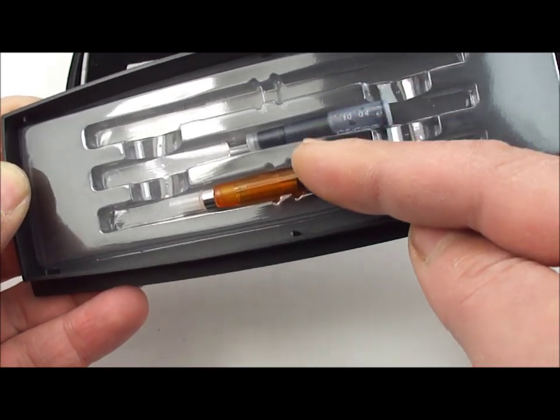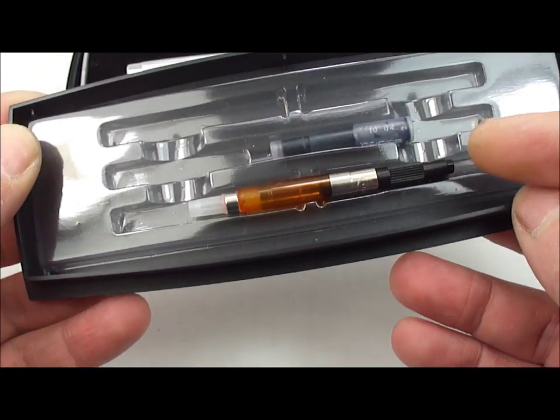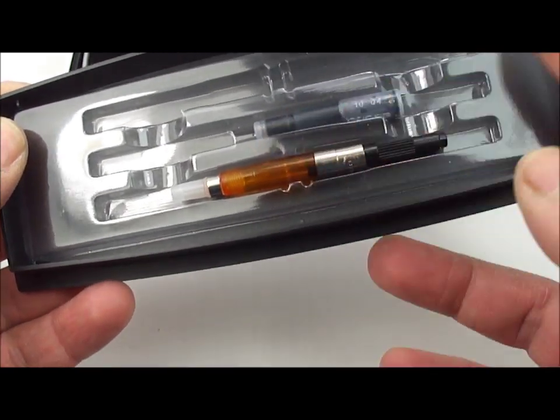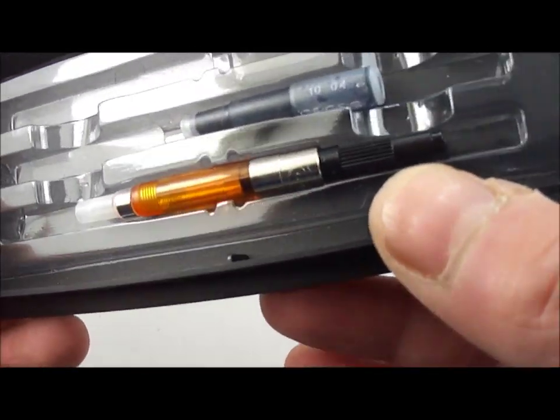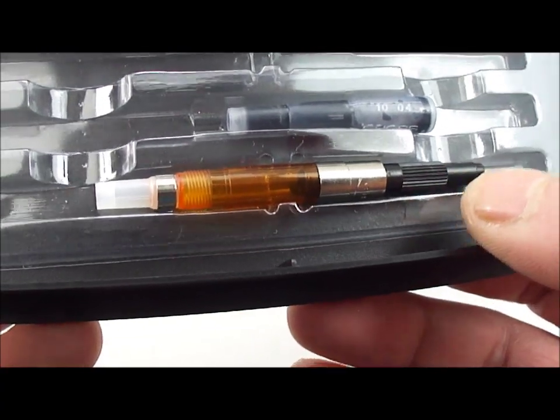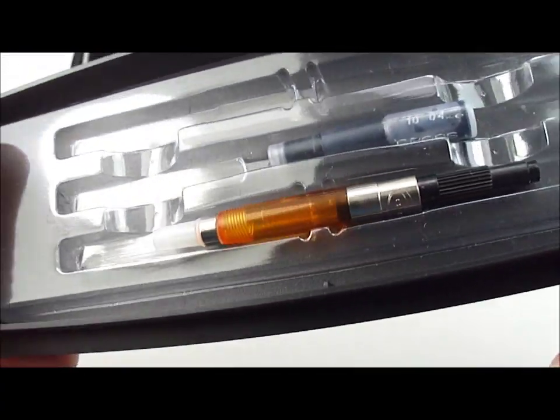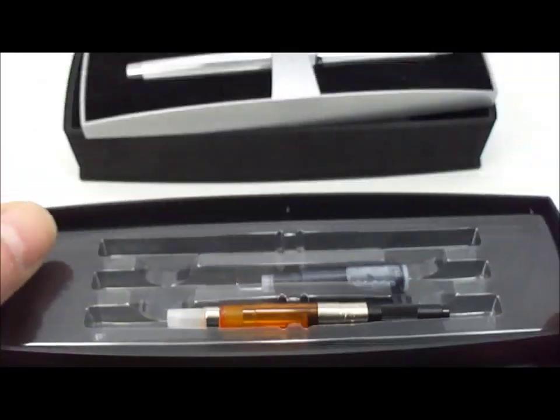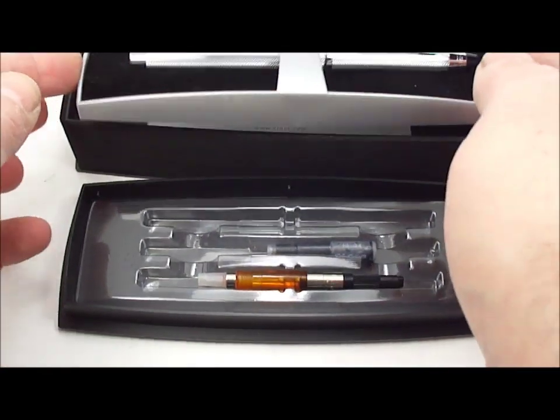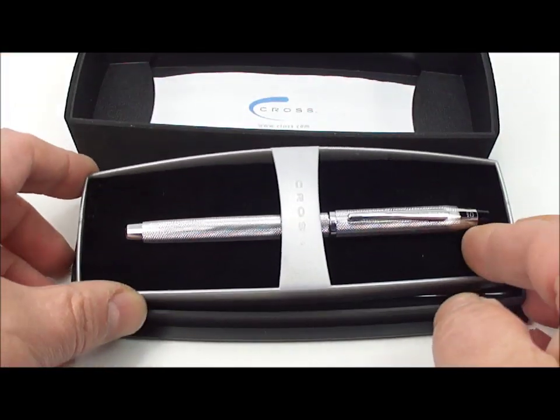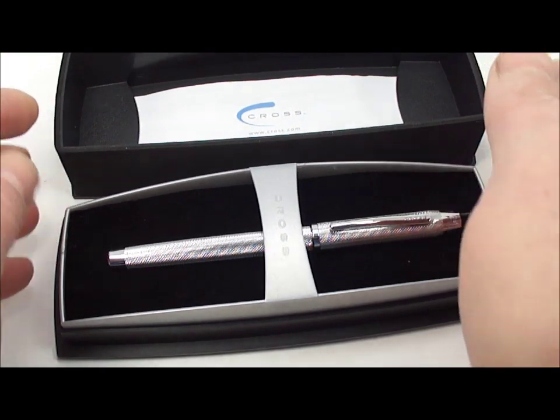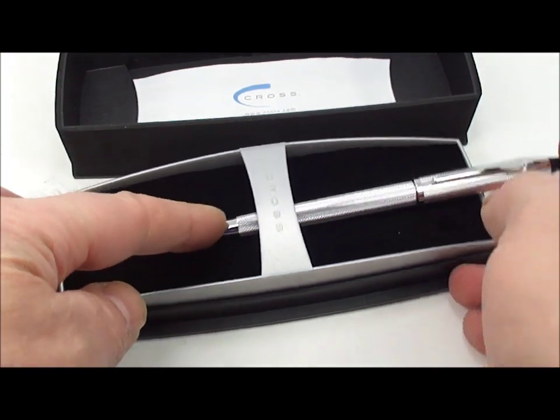A cartridge. I believe there should be two cartridges in here, there's one missing. Normally come with two cartridges and also it comes with this Cross converter that can be used for filling it from an ink bottle. Okay, so everything you have there, all the original things are actually in the box.